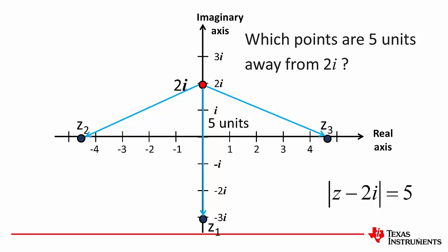These points can be summarized in much the same way as we did before, as the absolute value of z minus 2i equals 5. Or, interpreting that, the distance between some point z and 2i is equal to 5.